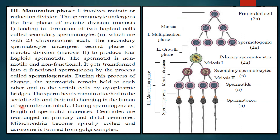The sperm heads remain attached to the Sertoli cells, and nourishment is taken from them, with their tails hanging in the lumen of the seminiferous tubule. During spermiogenesis, the length of the spermatid increases. Centrioles are arranged at proximal and distal positions. Mitochondria become spirally coiled, and the acrosome is formed from the Golgi complex. The acrosome is very important because it contains an enzyme called hyaluronidase.